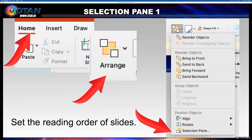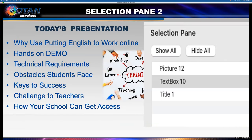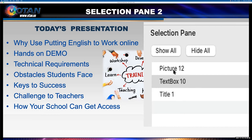Next, use the selection pane to set the reading order of your slides. First, select Home on the upper left, then Arrange — a window will open up with the option to choose Selection Pane at the very bottom. The selection pane opens on the right side of your screen. Notice on my slide, the title 'Today's Presentation' is at the top and should be read first, followed by the bullets in the text box, and finally the alt text of the picture. This is counterintuitive, but remember: the reading order in the selection pane is arranged from the bottom up. As you can see, the title is at the bottom of the pane, which is correct. Next up, we see the text box and then the picture at the top.